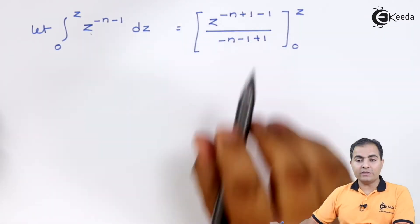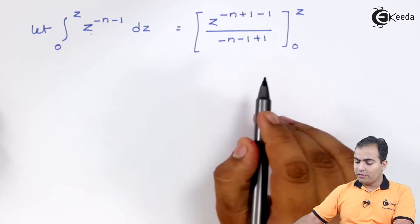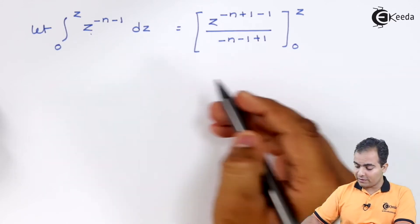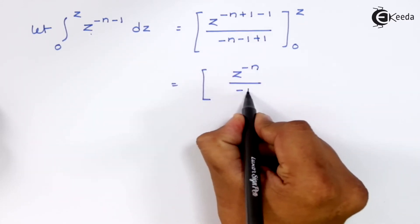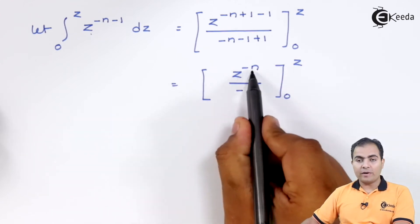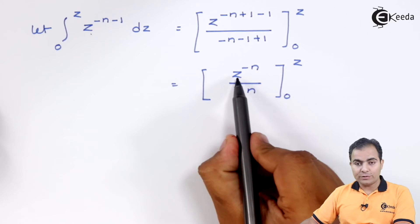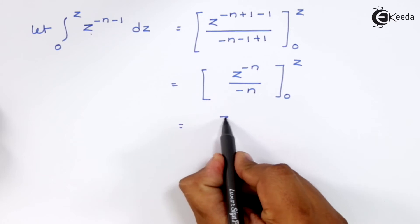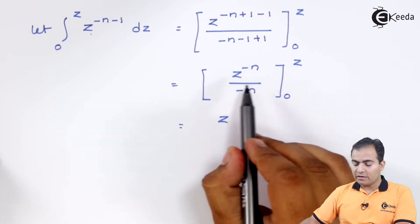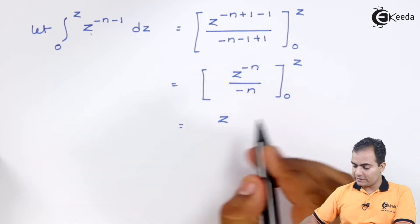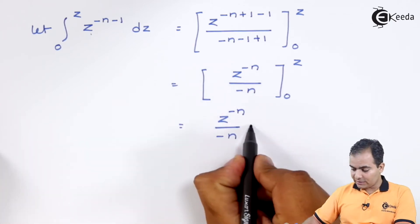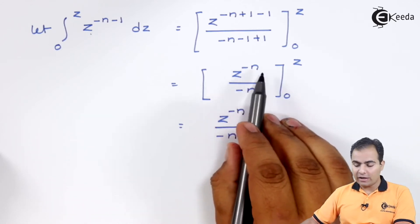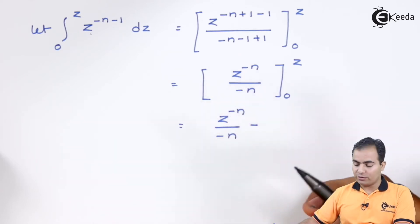We substitute the limits — upper limit Z and lower limit 0. The minus 1 plus 1 terms cancel, giving us Z to the power minus N upon minus N. Substituting the upper limit Z leaves the expression as is. For the lower limit, 0 raised to anything is 0, so that term vanishes. The result is Z to the power minus N upon minus N.